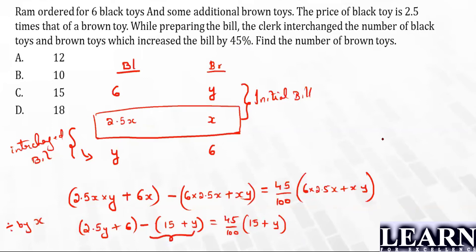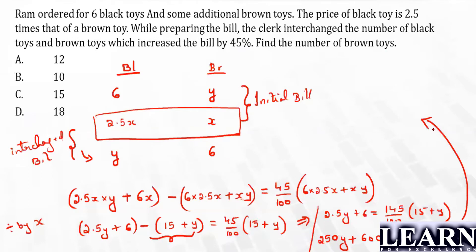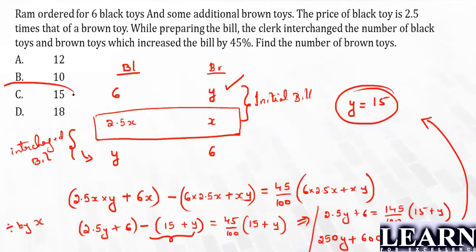Now we have only one unknown, y. Moving terms over: 2.5y + 6 = (145/100) × (15 + y). Cross-multiplying gives 250y + 600 = 145 × 15 + 145y. Eliminating and simplifying: 105y = 145 × 15 − 600, so y = (145 × 15 − 600) / 105 = 15. The number of brown toys is 15 — option C.